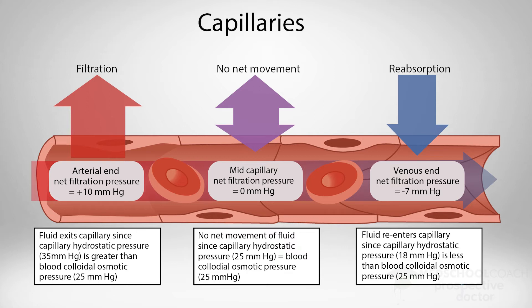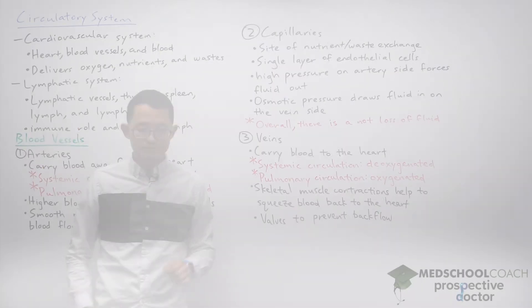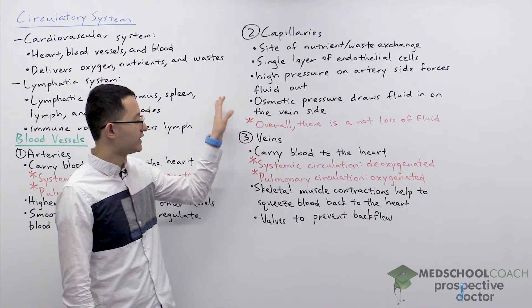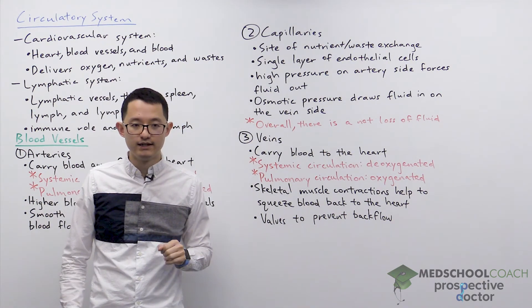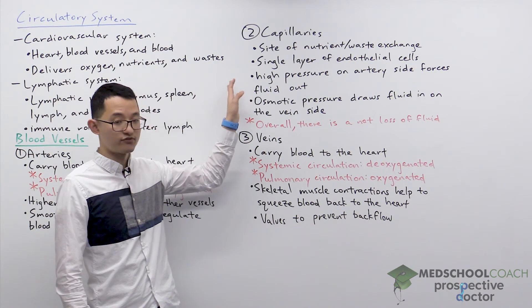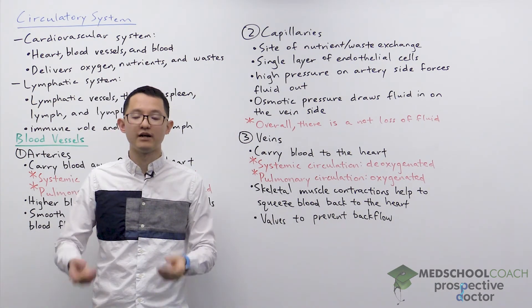What isn't being exchanged are large proteins — they are too large to pass through the capillary walls. So as the blood moves through the capillaries, the concentration of proteins increases because the fluid volume is decreasing. This causes fluid to move into the capillaries at the vein side through osmosis — we say that osmotic pressure draws in fluid on the vein side. So the high pressure on the artery side forces fluid out, and osmotic pressure draws fluid in on the vein side, but overall there is a net loss of fluid — more fluid is forced out than is reabsorbed.